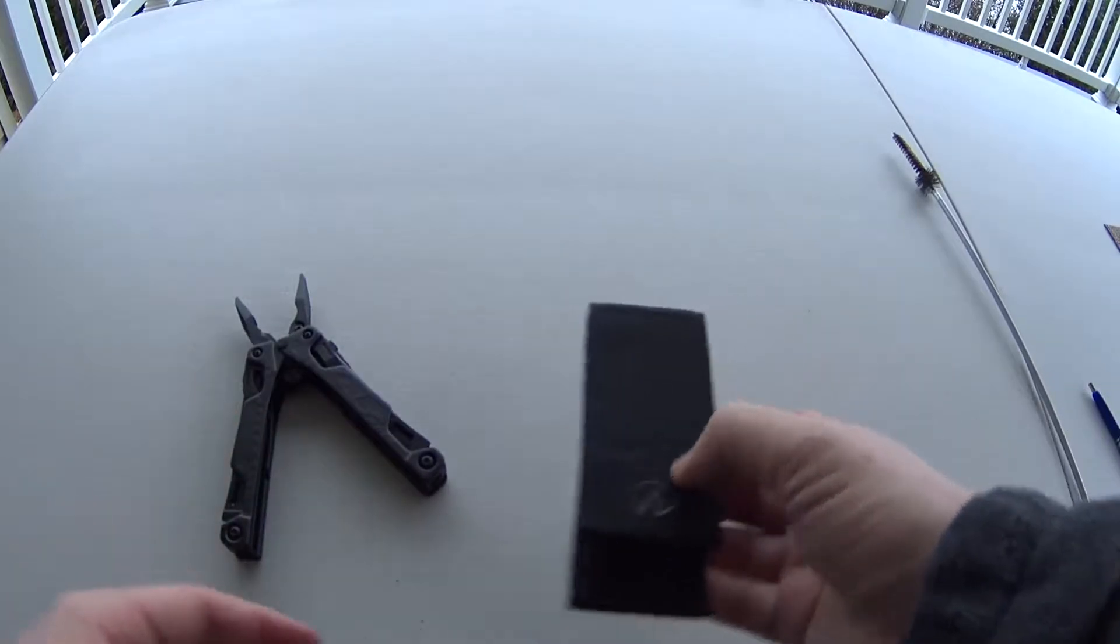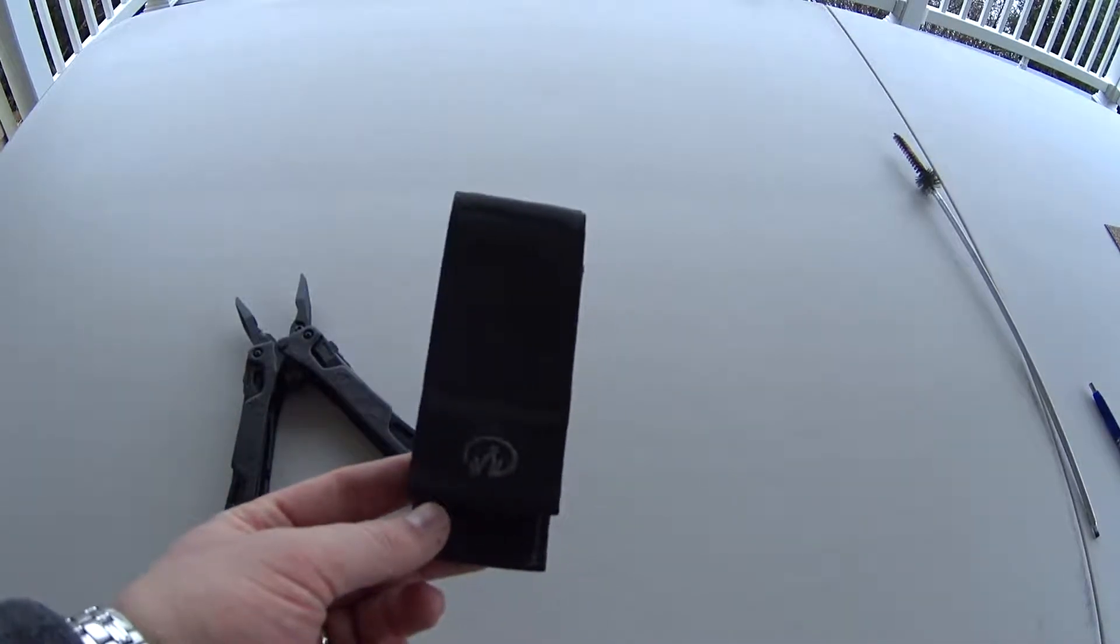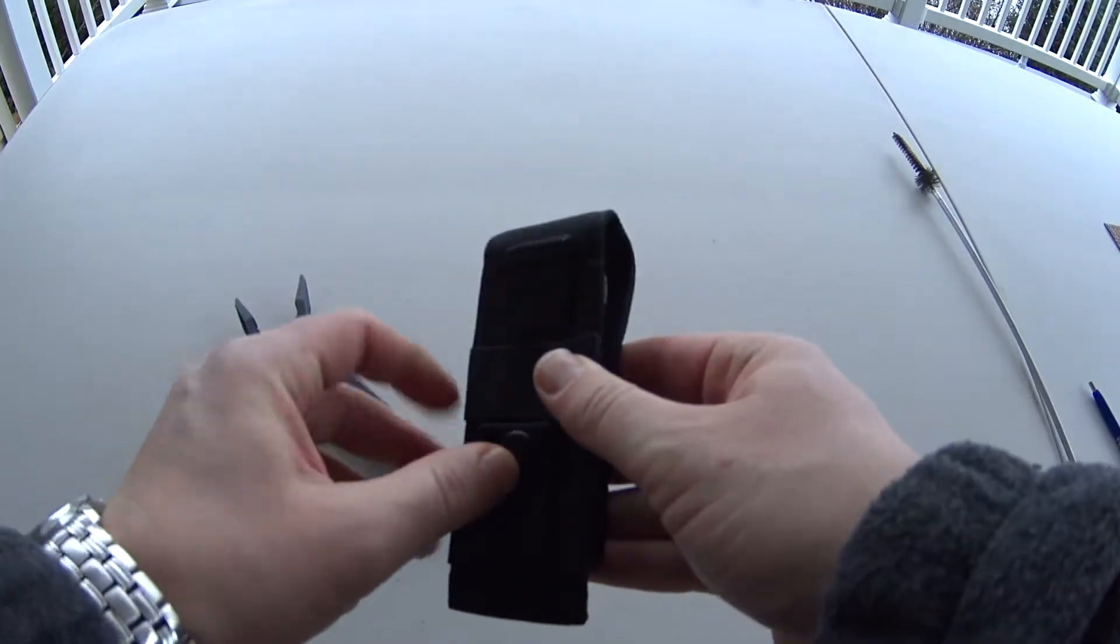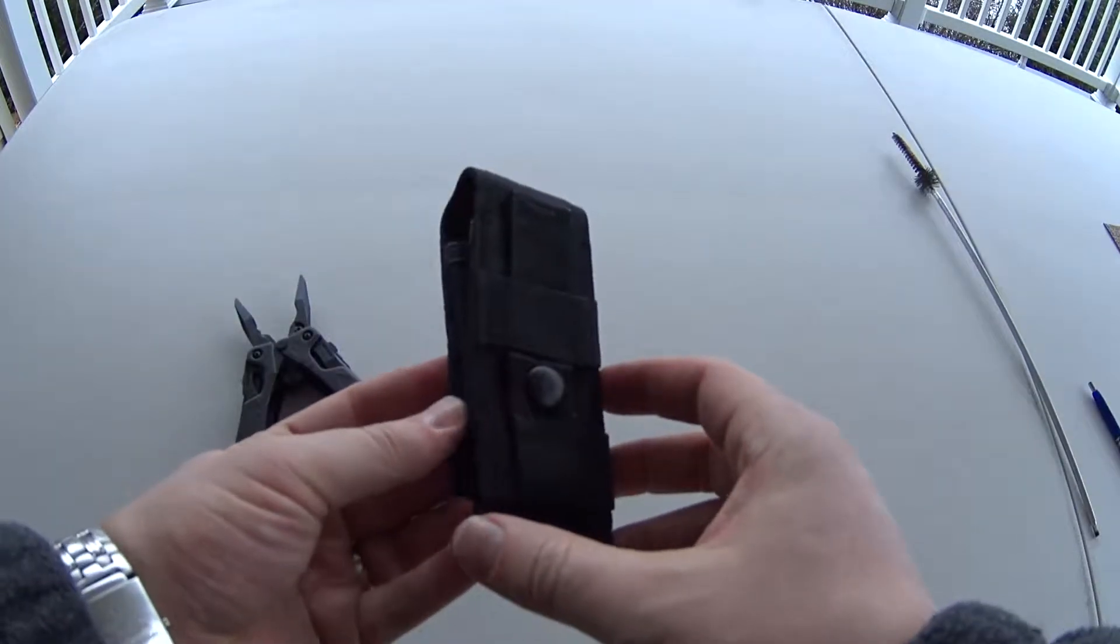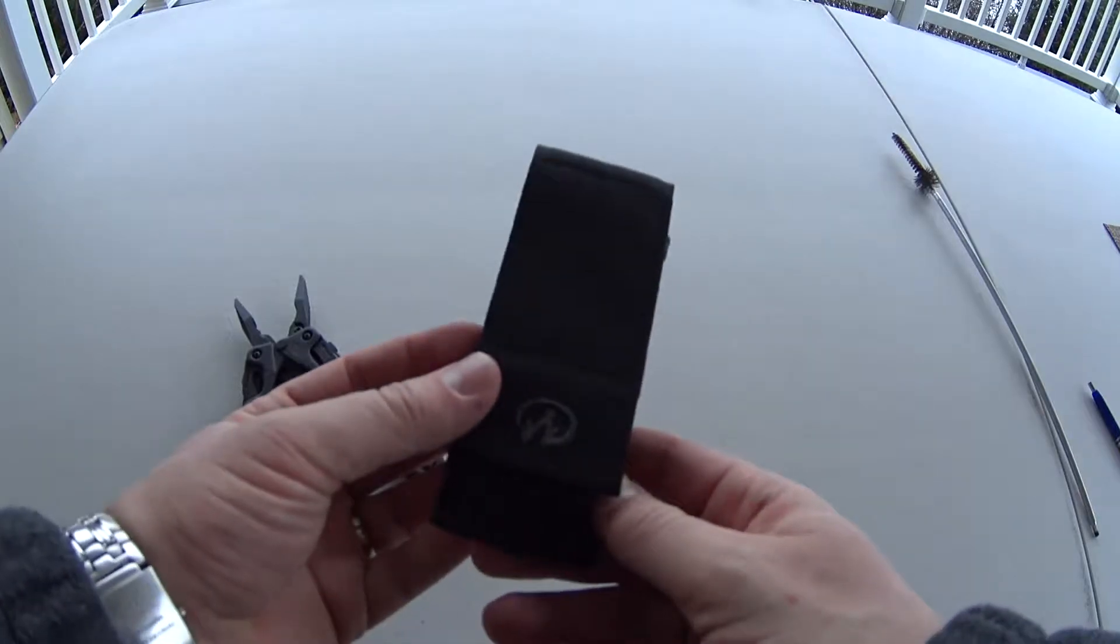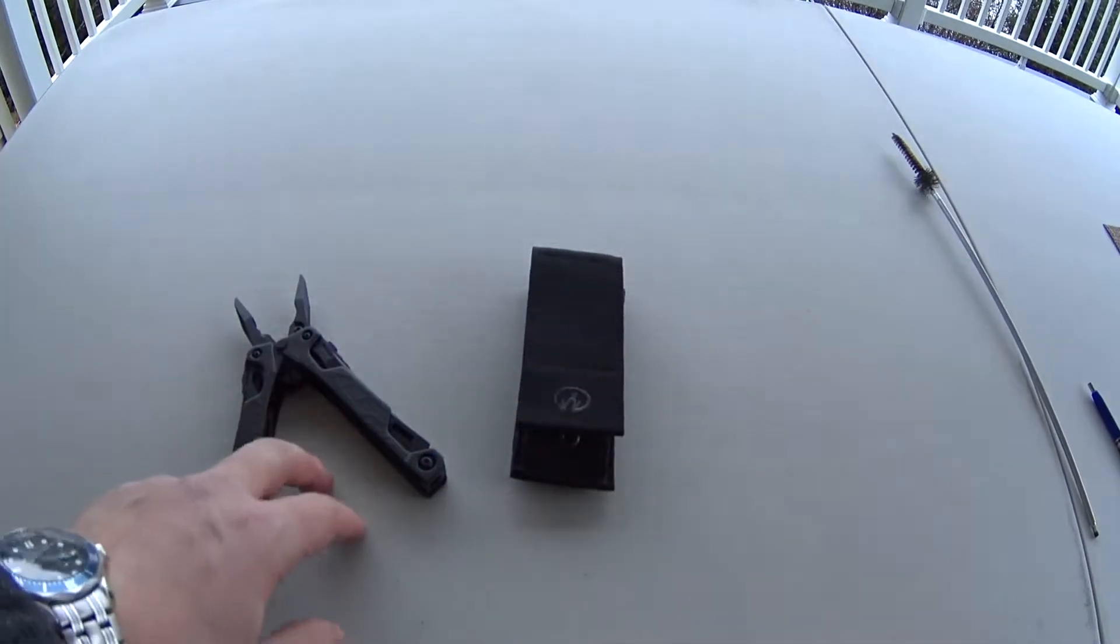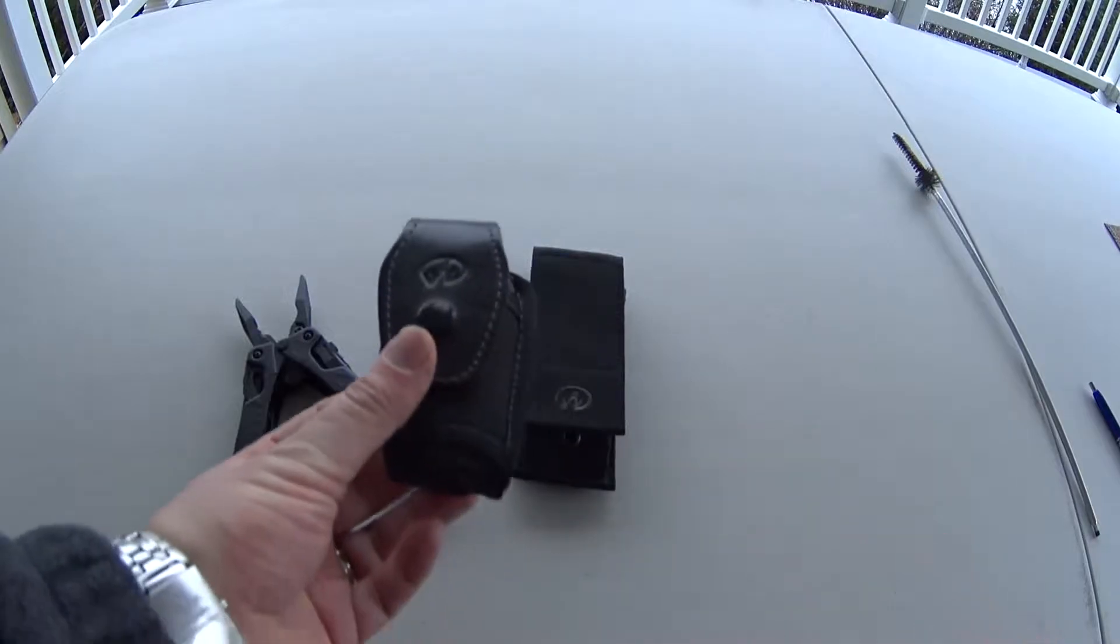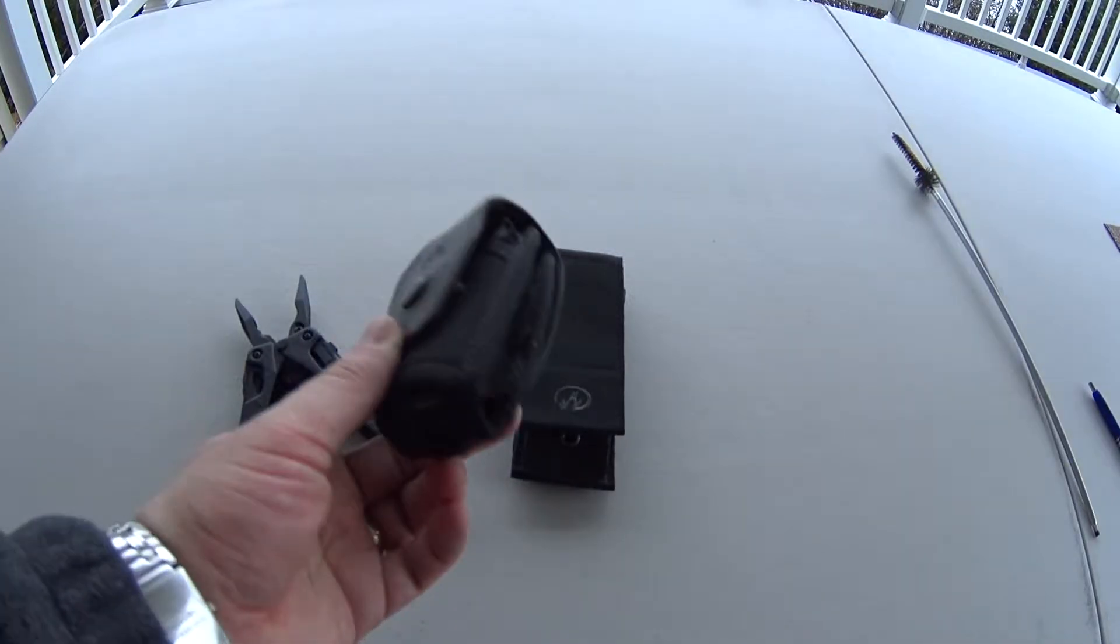That said, it does come with a decent sheath. Now this one does have the little snap, and you can attach it to MOLLE gear. However, it's not so great for attaching to your belt. So I do wish that it had an optional belt holster, or sorry, sheath that came with it, much like the one that I got on the Leatherman Charge.